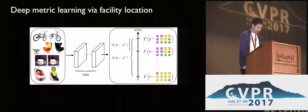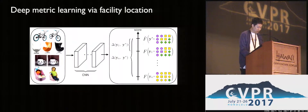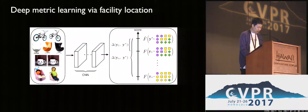Instead, we propose a global approach to deep metric learning. Our structured prediction framework learns to cluster a batch of data in an embedding space and makes use of evaluation metrics such as normalized mutual information during training. On the right, the three sheets represent the ground truth clustering assignment and the color codes represent the predicted clustering assignment.